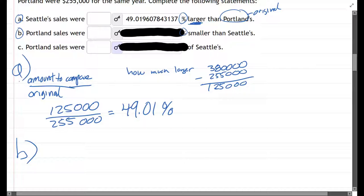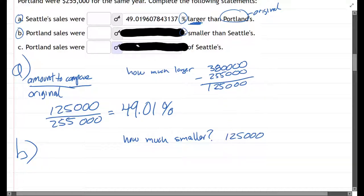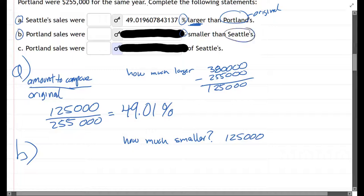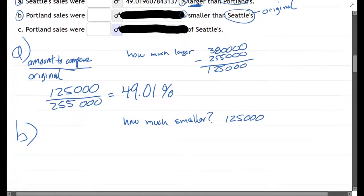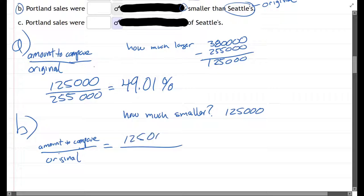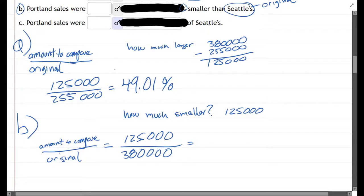Part B: Portland sales were blank percent smaller than Seattle's. We need to know how much smaller — good news is we've already done that work. We just take that same difference from above. Now we're comparing to Seattle, so in this case the original is Seattle. The amount to compare is how much smaller, so it's 125,000 divided by the original, which is 380,000.